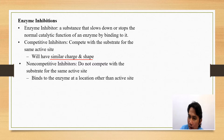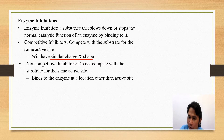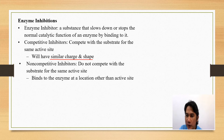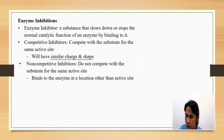So the enzyme is being fooled by the inhibitor. In non-competitive inhibition, the inhibitor does not compete with the substrate for the active site. Instead, the inhibitor binds to the enzyme at a location other than the active site — it binds elsewhere on another part of the enzyme.